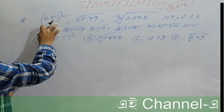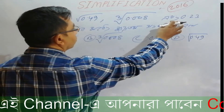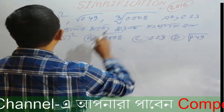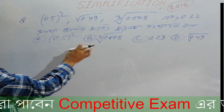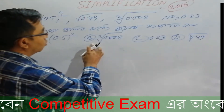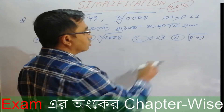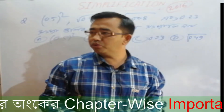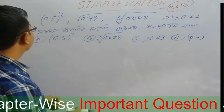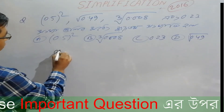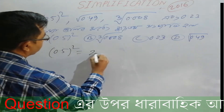The next problem involves: 0.5 whole square, square root of 0.49, cube root of 0.008, and square root of 0.25. We evaluate each: square root of 0.49 is 0.7, cube root of 0.008 is 0.2, and square root of 0.25 is 0.5.